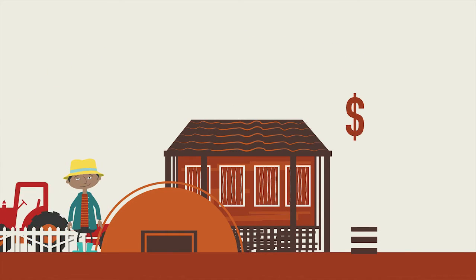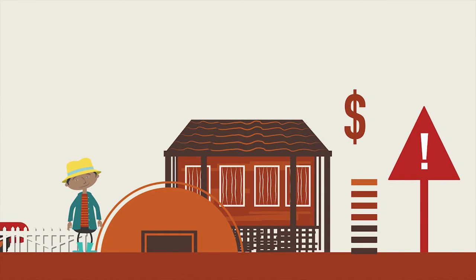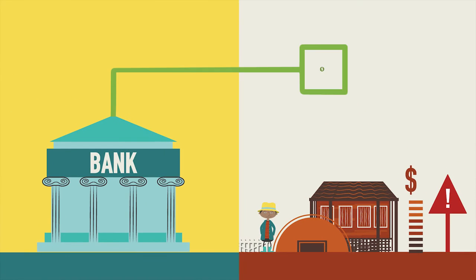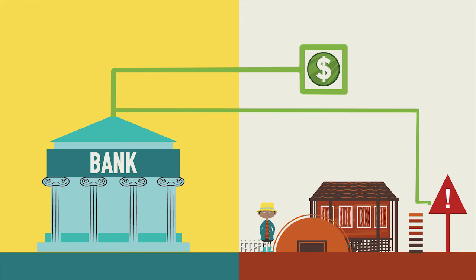Facing price risk exposure is a normal part of operations for an agribusiness, but banks should ensure that the business acts to minimize the chance of losses, and ensures that potential exposures are kept at a manageable level.